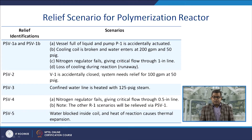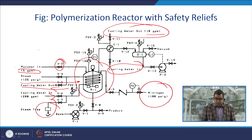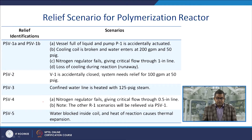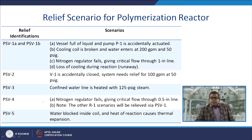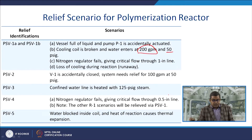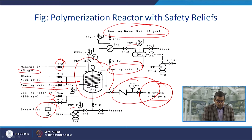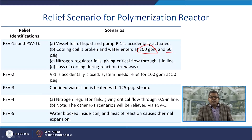The relief scenarios for this polymerization reactor include: PSV-1A and PSV-1B — vessel full of liquid and pump P1 accidentally actuated; cooling coil breakage allowing water entry at a specific pressure; nitrogen regulator failure giving critical flow through the inline; and loss of cooling during the reaction causing a potential runaway reaction.